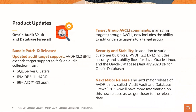Audit Vault and Database Firewall bundle patch 12 for AVDF 12.2 has been released. Updated target support includes SQL Server clusters, IBM DB2 11.1, IBM AIX 7.1, some target group AVCLI commands, and more security and stability functionality. The next major release for Audit Vault Database Firewall will be called AVDF 20, and we'll have more information on that as the release gets closer.